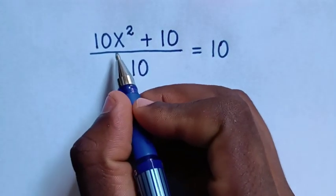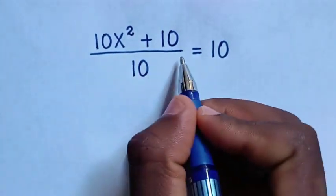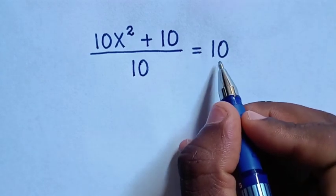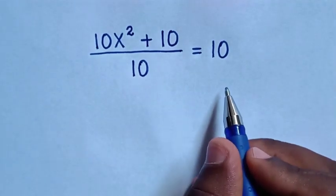Hello, how to solve 10x² + 10 over 10 is equal to 10 to find the values of x from this equation.